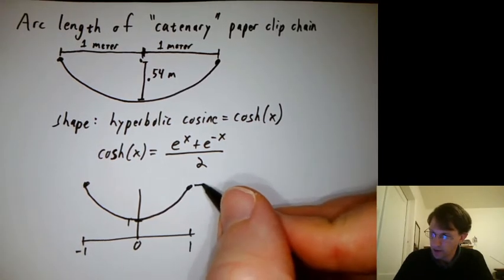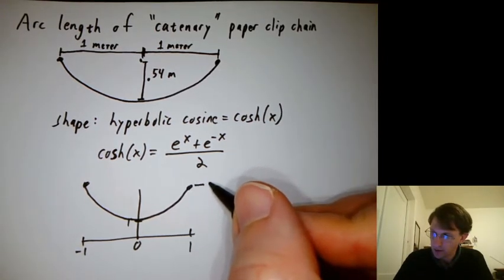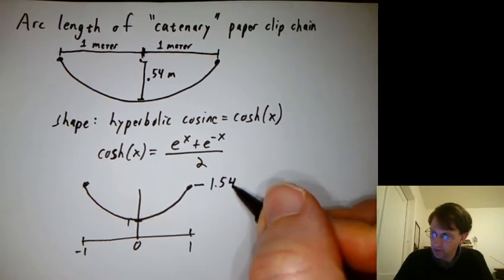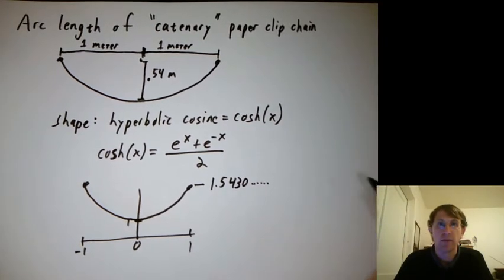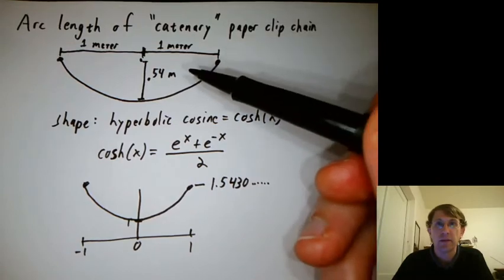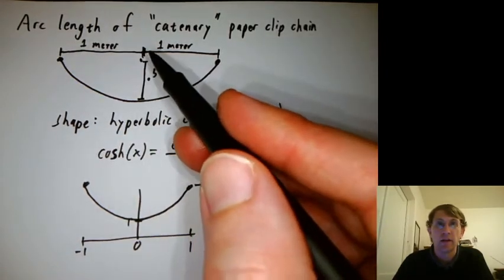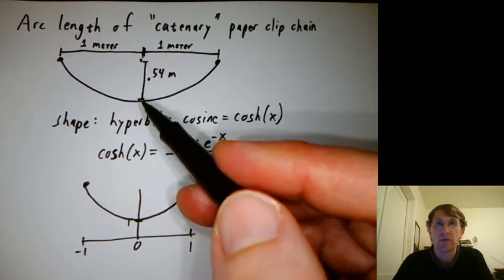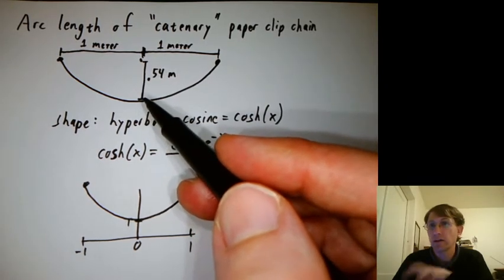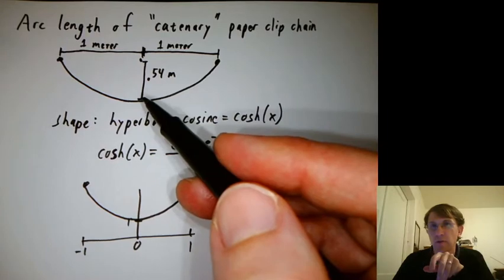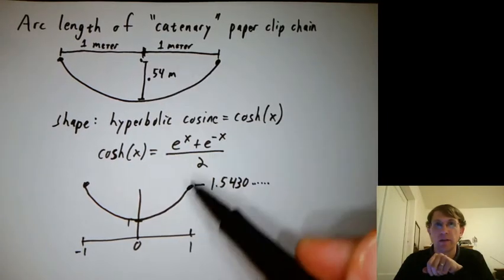And its y value here is about 1.5430 blah blah blah. So does it make sense that when we had that hanging chain there, it had a height of 0.54 from the vertex of the sort of parabola up to that level line?